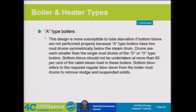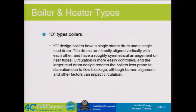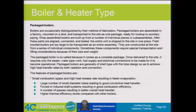A-type boilers—we see a little less of these, but these units have multiple steam drums and can have some issues with starvation and a little less beneficial circulation pattern in the boiler. A D-type boiler just has this kind of D-shaped look to its design.